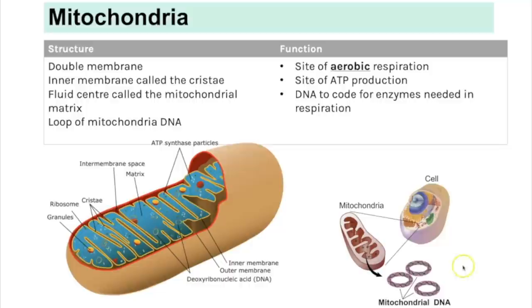The mitochondria is the site of aerobic respiration, so you'll have lots of ATP production here. It's a double membrane organelle — the inner membrane is folded to make the cristae, and that inner membrane is where oxidative phosphorylation happens, one of the key stages in aerobic respiration. Mitochondria have their own loop of DNA, very similar to prokaryotic DNA, so they can code for the enzymes they need in respiration.